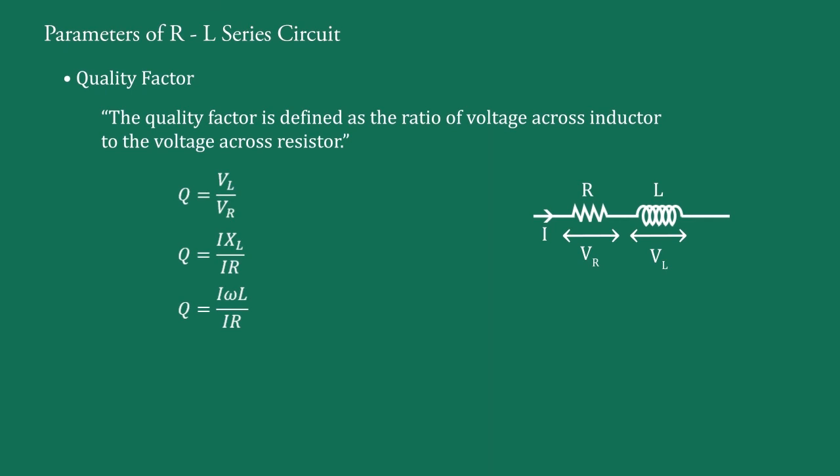Here, we drop j because it is not needed. Cancelling I's of the numerator and denominator, we have Q equals omega L upon R and this is the quality factor for RL series circuit.